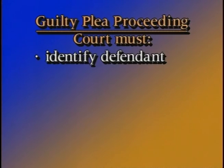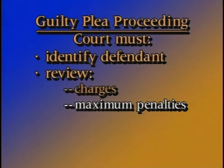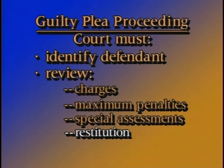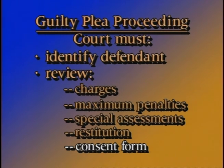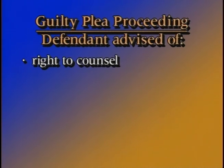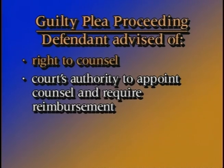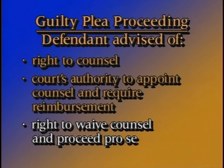The first thing the court must do is identify the defendant and review the nature of the charges, the maximum possible penalty, and any special assessment or restitution possibilities. The court should also review the consent form that the defendant signed granting the magistrate judge authority to try and sentence the defendant. If the defendant is not represented by counsel, the court must make certain that the defendant understands the right to be represented by an attorney at every stage of the proceedings, and if necessary, appoint one to represent the defendant. If the defendant is financially unable to retain an attorney, the court must inform the defendant that it has authority to appoint an attorney and may require reimbursement for the cost. The defendant also has a constitutional right to waive counsel and represent himself or herself if he or she chooses to do so.